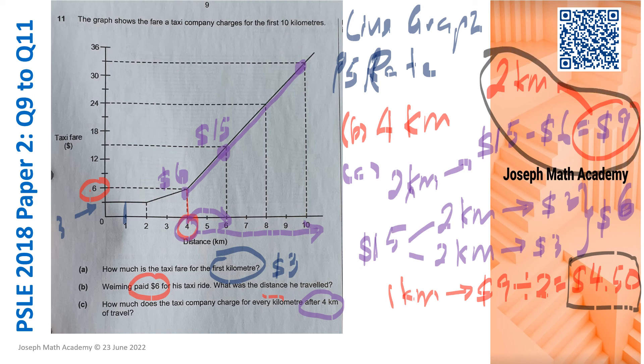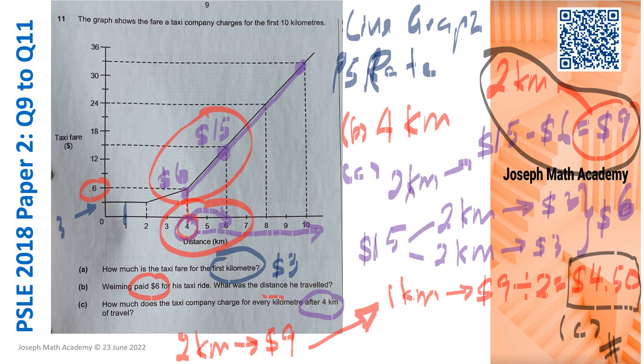So by looking at this part here, I can get part C done. $15 minus $6 gives us $9. And $9 is for the 2KM traveled from 4 to 6. So if it's 2KM, $9, then 1KM must be $4.50. So question 11 is done.